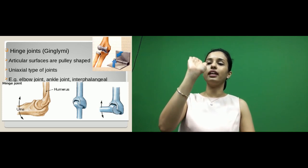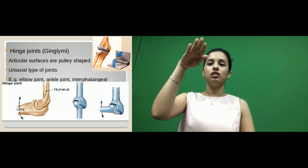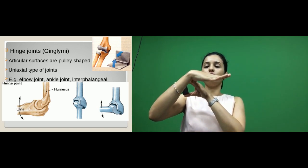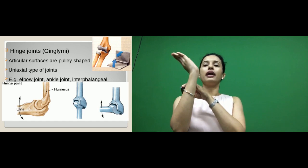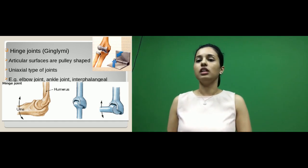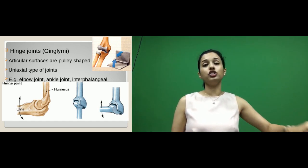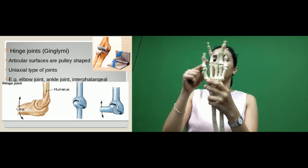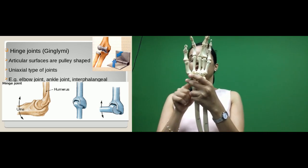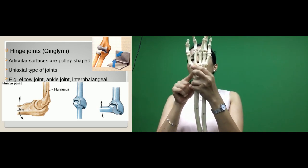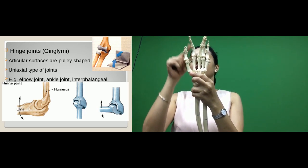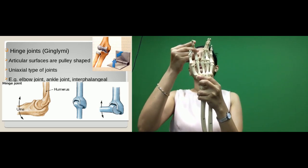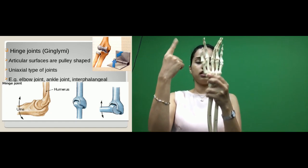Other examples of hinge joints include the ankle joint in the lower limb, where you see plantar flexion, and the interphalangeal joints — between the phalanges of the hand. These also show the hinge type, mainly helping in flexion and extension.